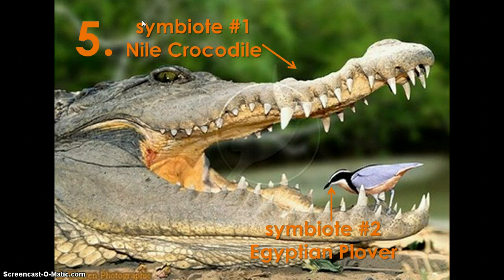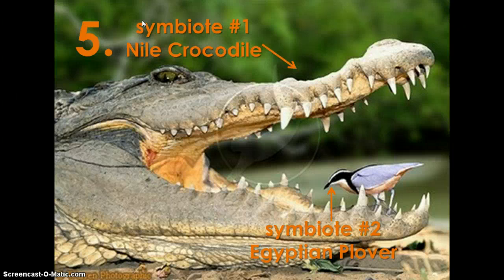In relationship number five, symbiote number one is the Nile crocodile and symbiote number two is the Egyptian plover. The Nile crocodile is benefiting because the plover cleans any residual meat, bacteria, or bugs from its mouth, preserving its teeth, which are critical for capturing prey. The Egyptian plover is also benefiting because it gets a safe, protected area to feed and a free food source without the worry of predators.